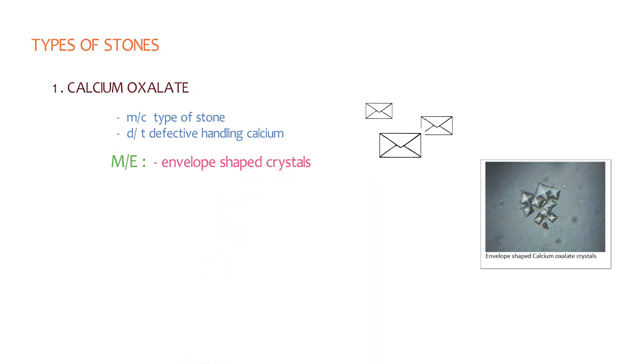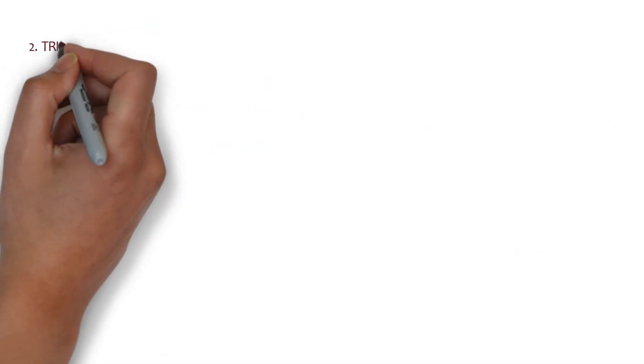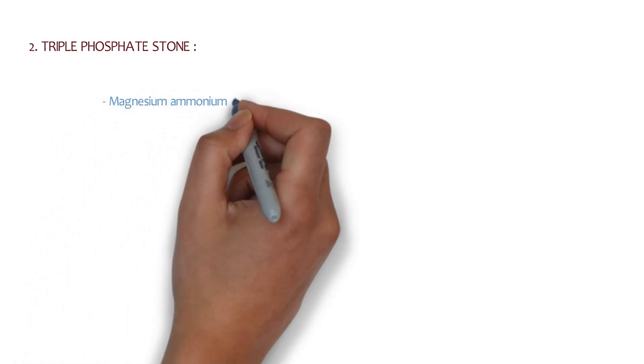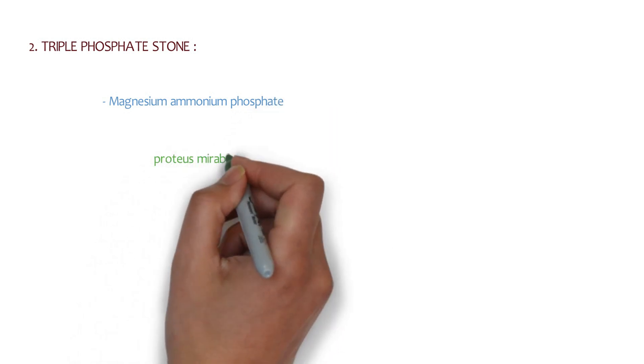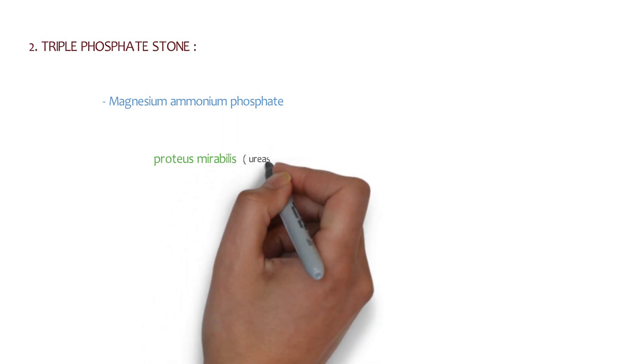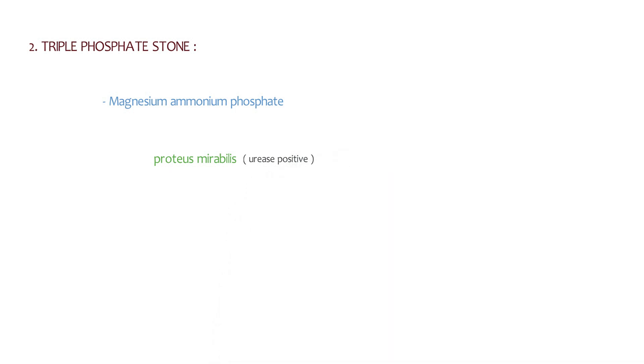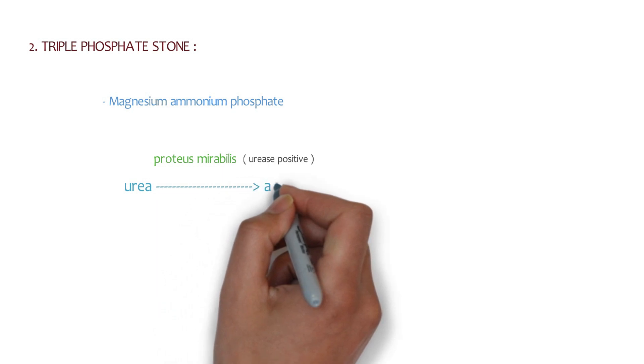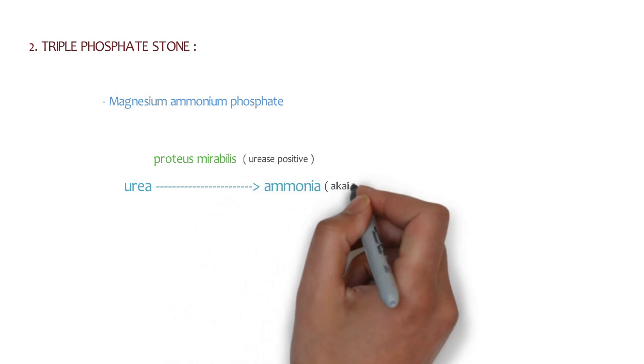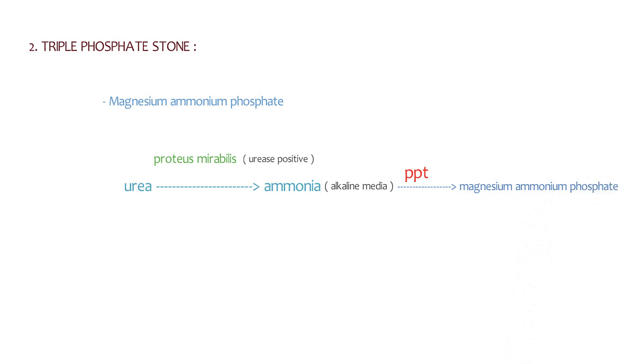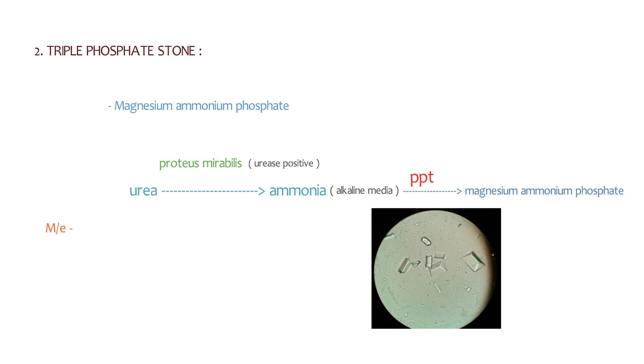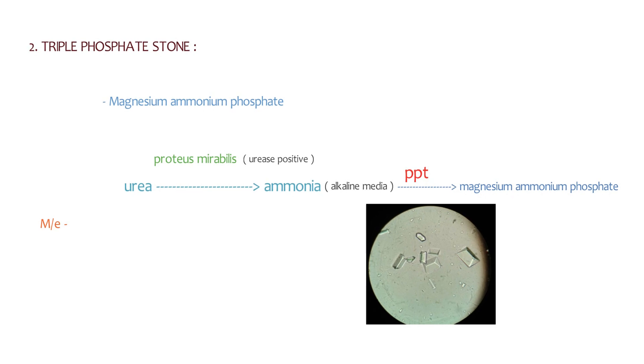The second one is triple phosphate stone, which is formed due to magnesium ammonium phosphate. How is it formed? There is an infection due to the bacteria named Proteus mirabilis, which is urease-positive bacteria. This bacteria splits up the urea into ammonia, so there is an increase in production of ammonia, which is the reason behind the alkaline medium of the urine. The precipitation of this ammonia leads to the formation of magnesium ammonium phosphate. In microscopic examination, if we examine the stone, it looks like a coffin lid. So in microscopic examination, there is a coffin lid appearance.